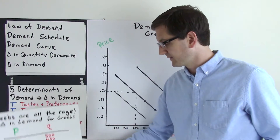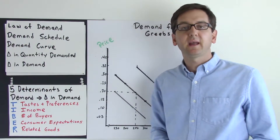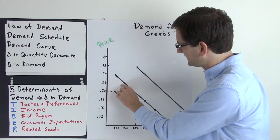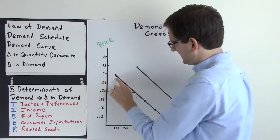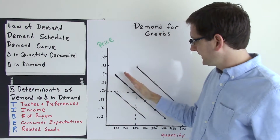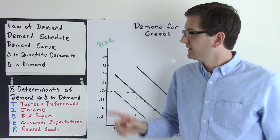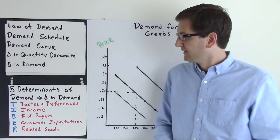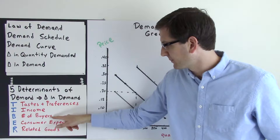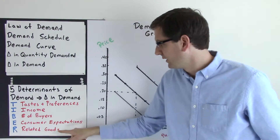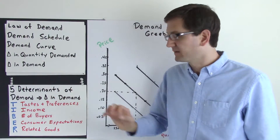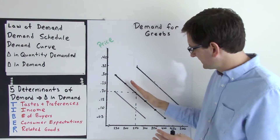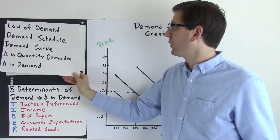So let's talk about the determinants of demand — the five determinants that cause a change in demand. There is only one determinant that causes a change in quantity demanded, and that's a change along any individual demand curve: as price decreases, quantity demanded increases. But a change in demand causes a shift in the curve entirely, and there are five determinants that will cause that shift. We can remember them through the acronym TIBER: T — tastes and preferences, I — income, B — number of buyers, E — consumer expectations, and R — related goods.